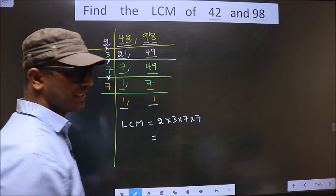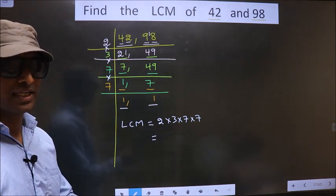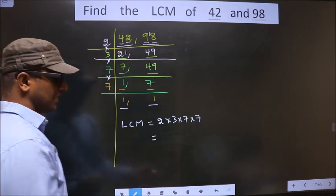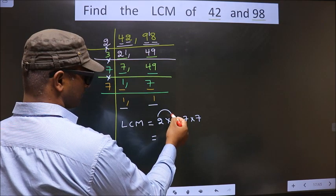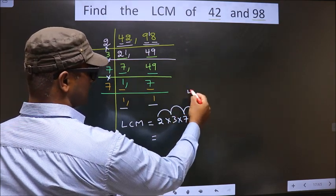So you multiply all these numbers. Whatever number you get, that is your LCM. Let us multiply. That is, 2 into 3 is 6. 6 into 7 is 42. 42 into 7.